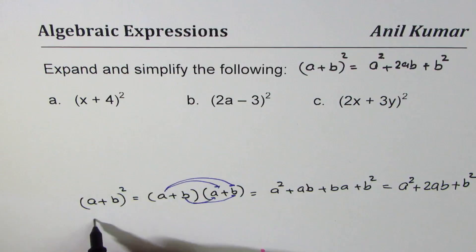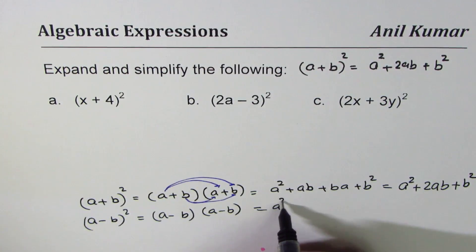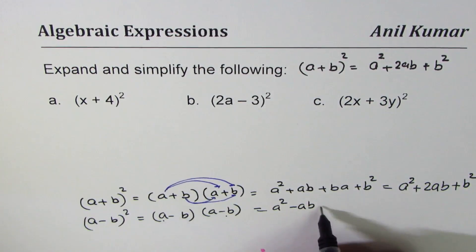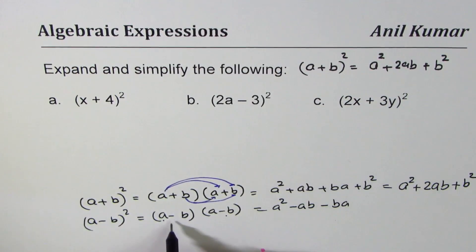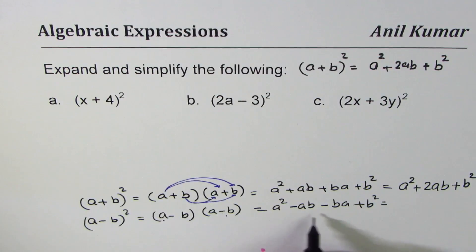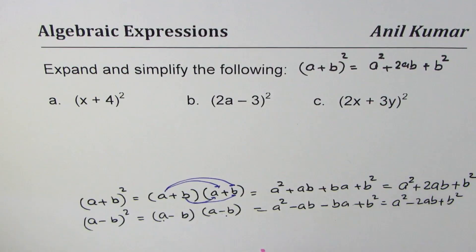Now if I was doing a minus b whole square, when you multiply we get a square, a times minus b is minus ab. Minus b times a is minus ba and minus minus makes it plus b square. This time we get minus 2ab. So we get a square minus 2ab plus b square.